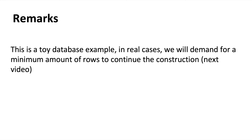As a summary, we saw one full example of how to build a decision tree from a database — mostly a toy database. In real cases, we demand a minimum number of rows to continue construction; many of our leaf nodes here were based on just one or two rows, which is not statistically significant. In the next video, we are going to see some of the pruning criteria to stop construction when we have too few rows remaining.